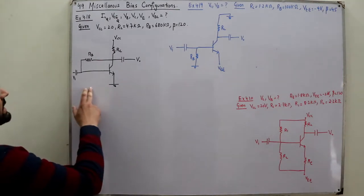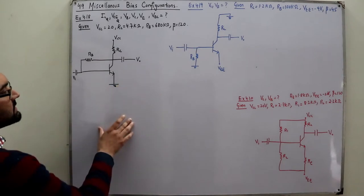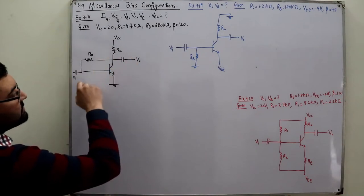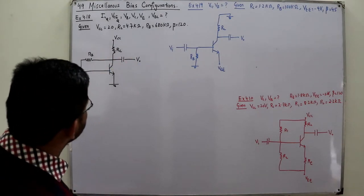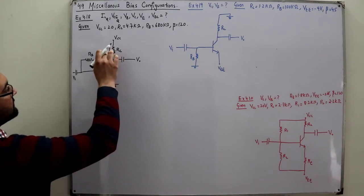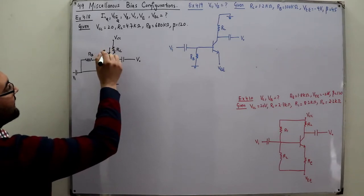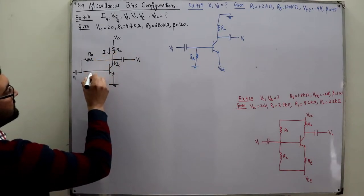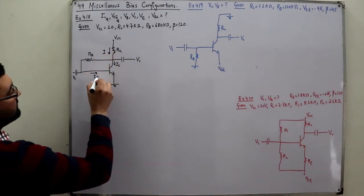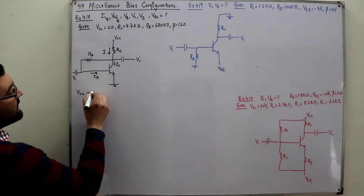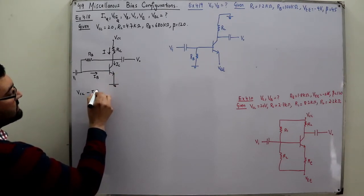Coming into question number one: input is applied at the base, output is taken at the collector — this is a common emitter configuration with collector-to-base biasing. The current flowing through this branch would be IC, through this branch you'd have IB plus IC, and this one would be IB.